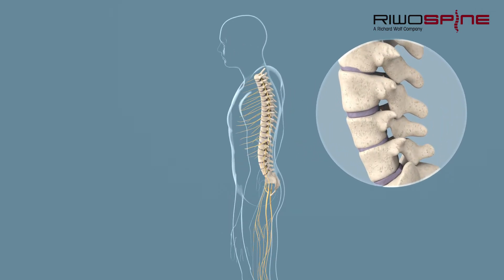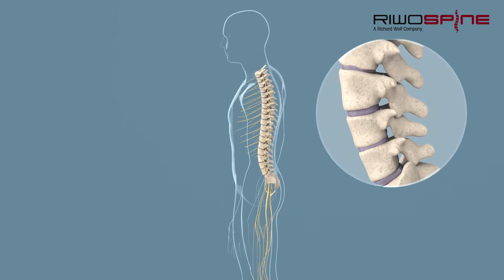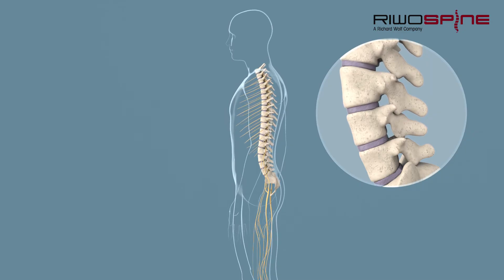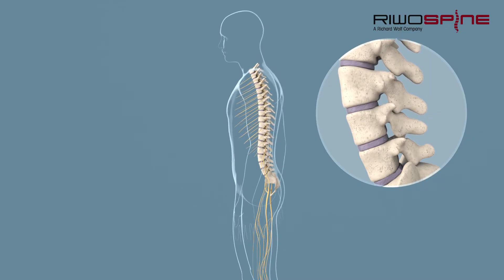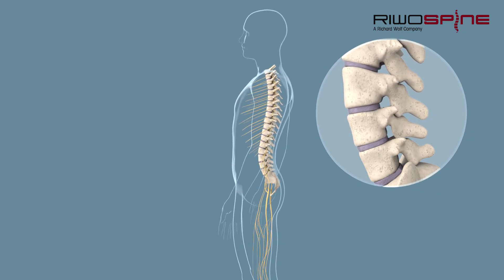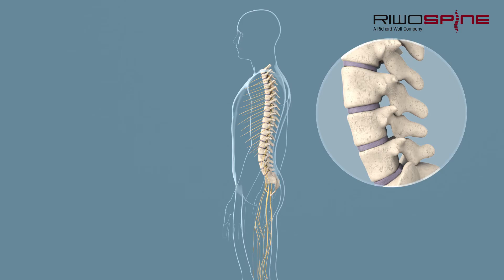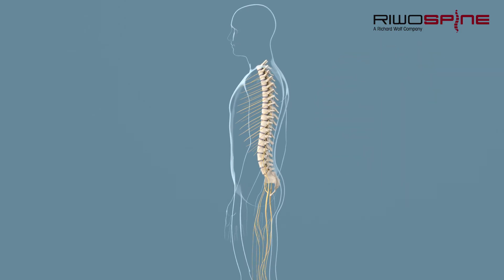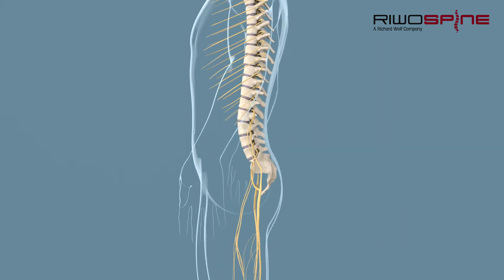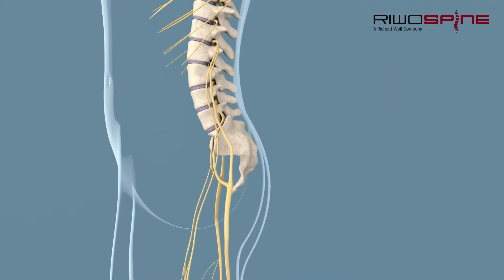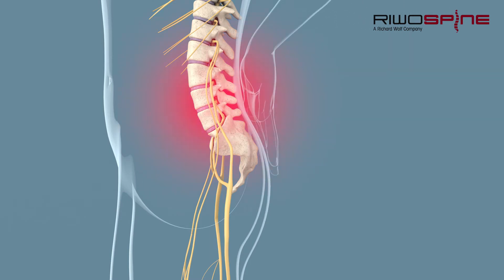As a connection between the individual vertebral bodies and due to their soft structure, they are an important component of the function of the spinal column. Various causes can promote wear and tear of certain structures or lead to certain pain symptoms of the spinal column.